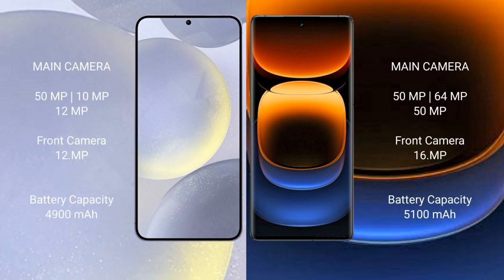The Samsung Galaxy S24 Plus features a rear triple camera setup: 50MP plus 10MP plus 12MP, with a 12MP front camera. The Vivo iQOO 12 Pro features a rear triple camera setup: 50MP plus 64MP plus 50MP, with a 16MP front camera.